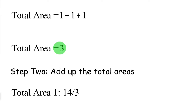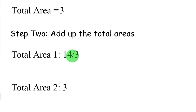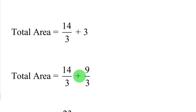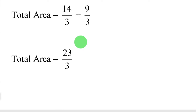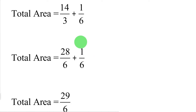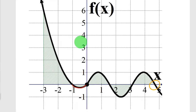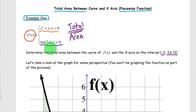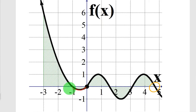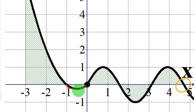Now we add up our total areas. The area of the first piece, x² + x, is 29/6. The area of the second piece is 3. Adding those with common denominators gives 29/6 + 18/6 = 47/6 — wait, that's approximately 7.6 repeating, so the total is 23/3. Looking at the final graph to confirm, the total shaded area is around 7.6 repeating. The steps are easy: find the total area of each piece of the piecewise function by breaking each piece into sub-pieces, take the absolute value of each sub-piece's definite integral, and add those total areas up.